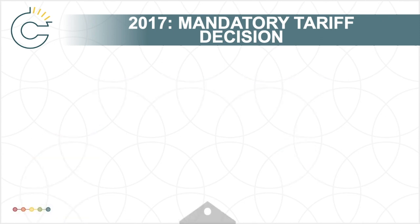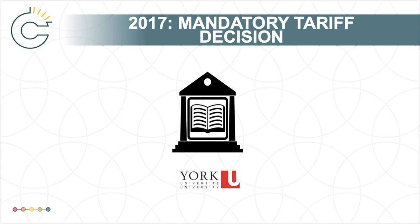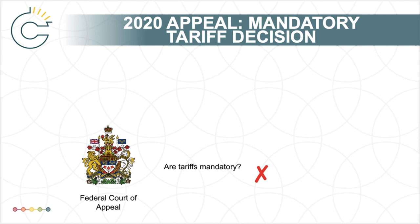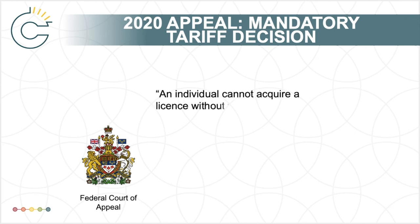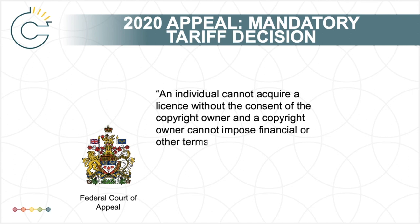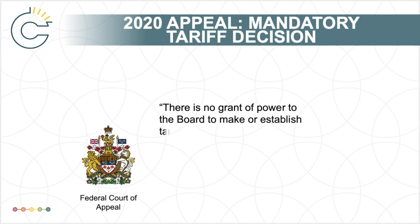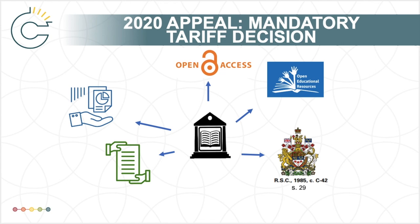Because of criticism like this, there was substantial pushback following the ruling, and it was no surprise that York appealed on both grounds — the fairness of its guidelines and whether tariffs are mandatory. The Federal Court of Appeal reached its decision in April 2020. On the mandatory tariff issue, the court overturned the 2017 decision and found that tariffs are not mandatory. The court determined that an individual cannot acquire a license without the consent of the copyright owner, and a copyright owner cannot impose financial or other terms on a person who has not agreed to become a licensee. Instead, if copyright is infringed, the copyright owner can seek legal damages. The court also stated there is no grant of power to the Copyright Board to make or establish tariffs by regulation. This was a welcome result for the post-secondary community, allowing institutions the freedom to choose from a range of approaches to remain copyright compliant.